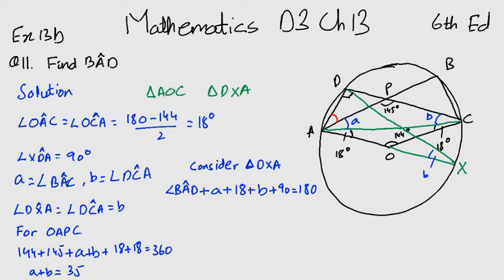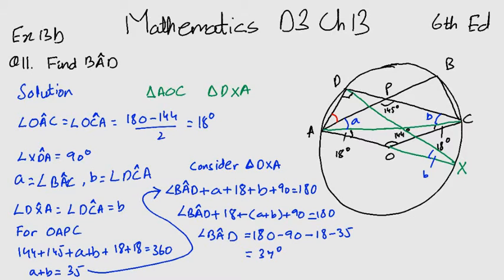Fortunately, A and B here are together as a sum whose answer we know as 35. So we are going to put that in our expression, and BAD comes out to be 37 degrees. And this is our answer.